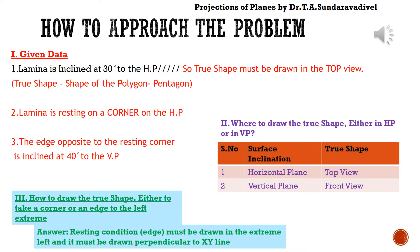From the table, if the surface is inclined to HP, the true shape should be drawn in the top view. How to orient the lamina — either taking a corner to the left or an edge to the left — is decided by the resting condition. If the lamina is resting on a corner, we have to take a corner to the left, and the edges contained by that corner should be equally inclined. This point is very important.